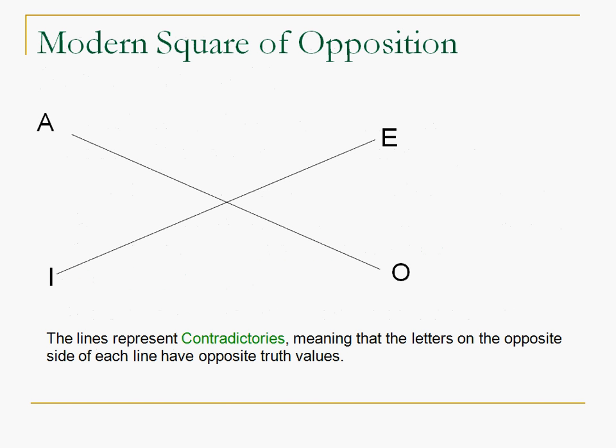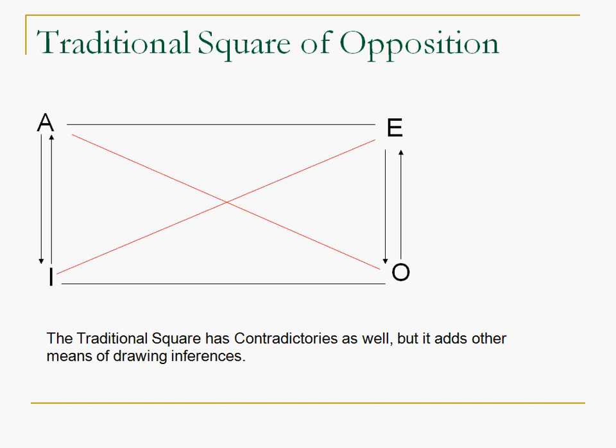So we have the modern square of opposition, right? And all the modern square does is it says, you know, if A is true, O has to be false. Similarly, if O is true, A is false, and E and I have that same relationship, right? The corners have opposite truth values. The contradictories are still going to hold for the Aristotelian perspective. But we're going to add some relationships as well. And I'll discuss each of these relationships separately.